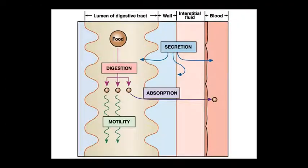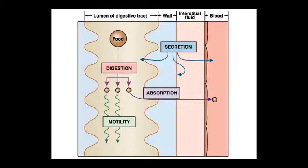In the lumen of the digestive tract, the food you have eaten goes to the stomach where it is digested into small pieces. These small pieces become absorbable molecules. The walls of the digestive tract absorb them, and from the intestinal fluid they pass into the blood. There are secretions here as well that contribute to the volume of the digestive tract.